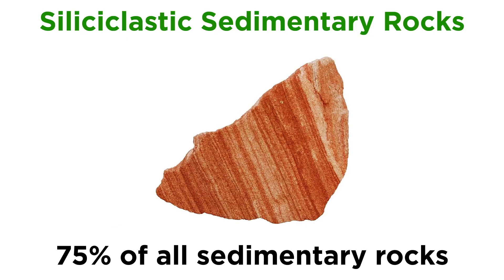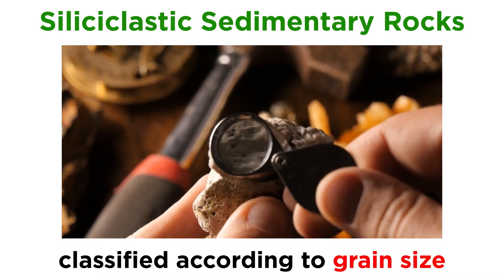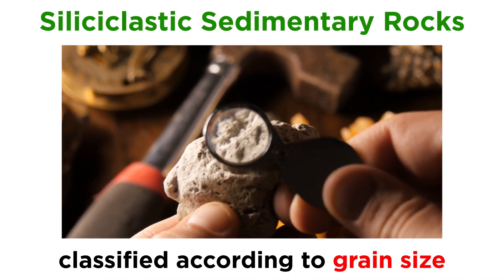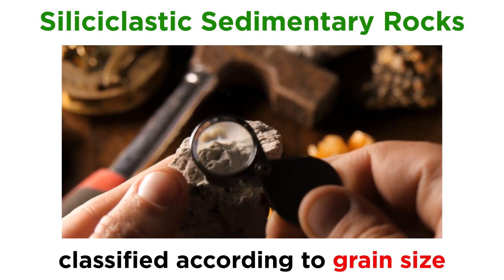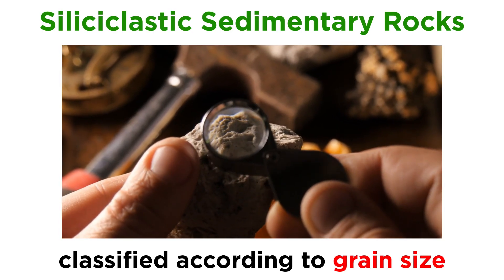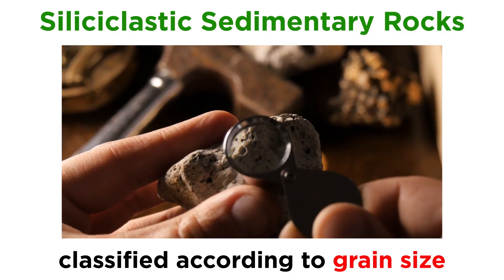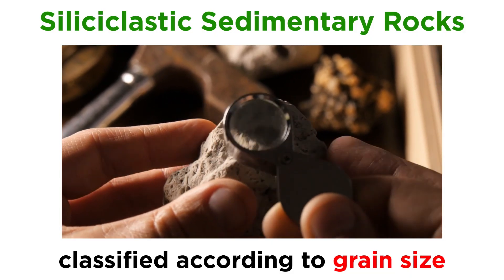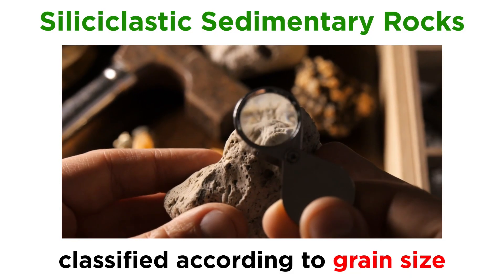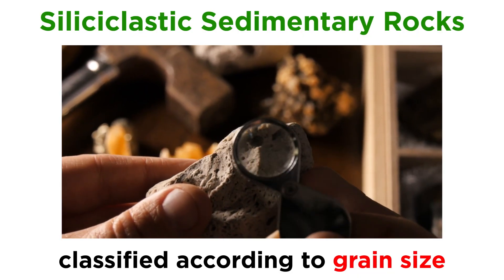Let's start with the siliciclastic sedimentary rocks, since they are the most abundant, accounting for roughly three-fourths of all sedimentary rocks. In our study of igneous rocks, we learned that one of the first steps in analyzing a hand sample is to determine the grain size, and the same holds true for sedimentary rocks. In fact, the main way that geologists classify siliciclastic rocks is based on grain size.